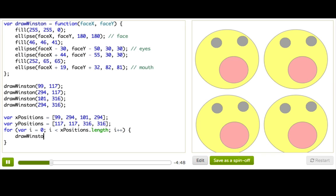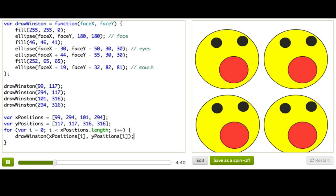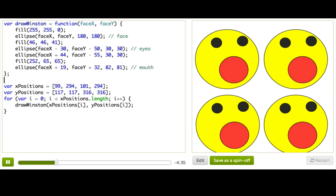And we'll say drawWinston xPositions[i] and yPositions[i]. Let's see if that worked by deleting. Alright, that worked. So now we just have this one line of code that does drawWinston, but it does it for every position in the xPositions array.